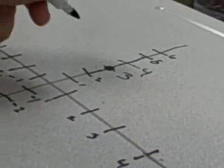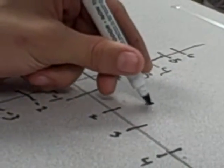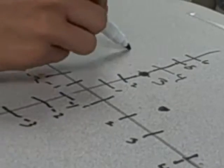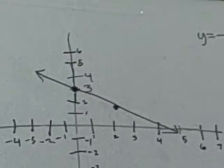Only thing I would say, did you say what the y-intercept was? No problem. And since the slope is negative one-half, we're going to go down 1 and over 2. It looks like this in the end.